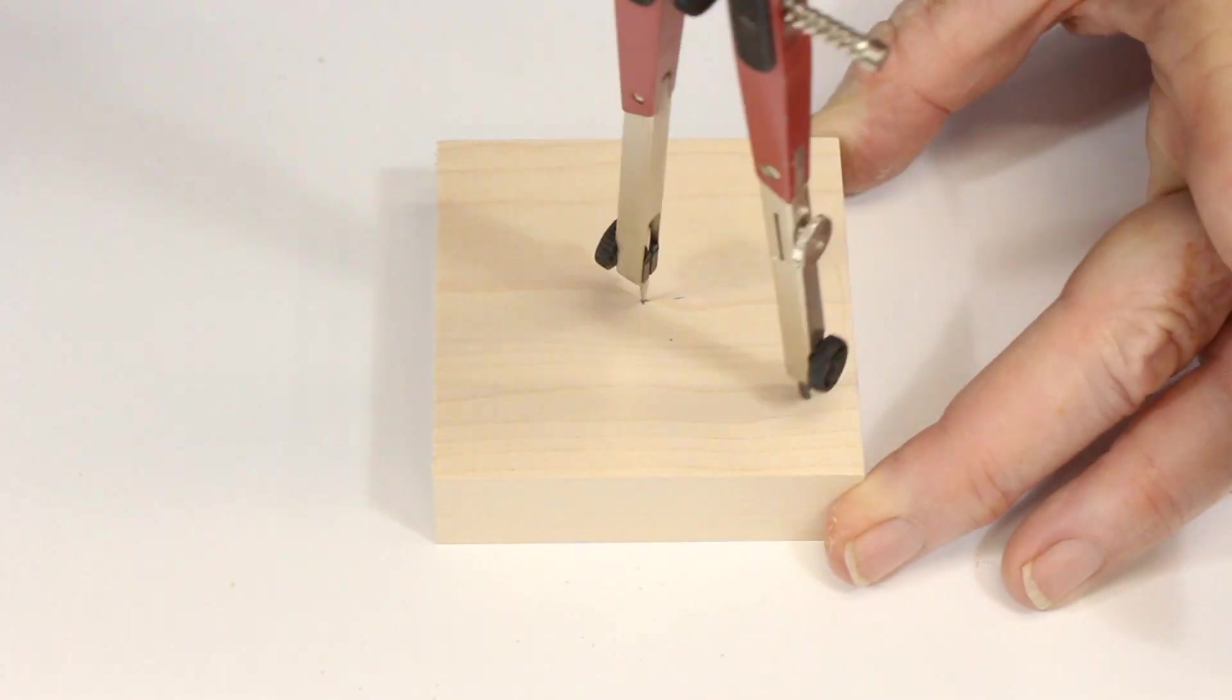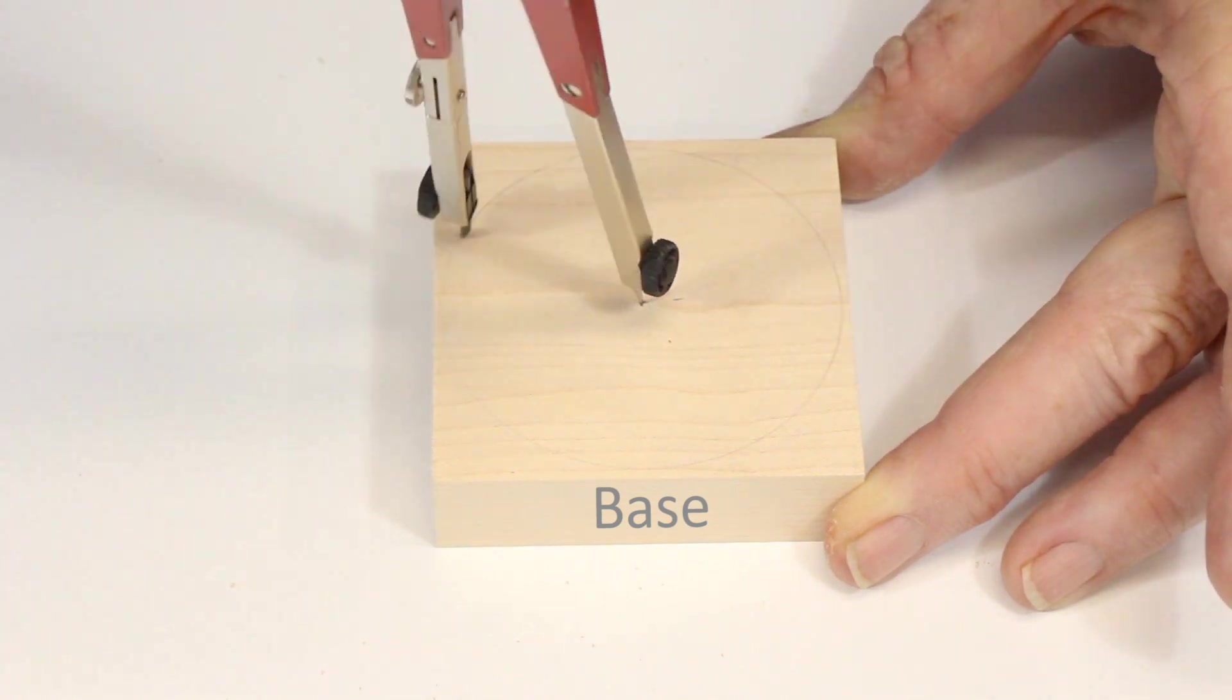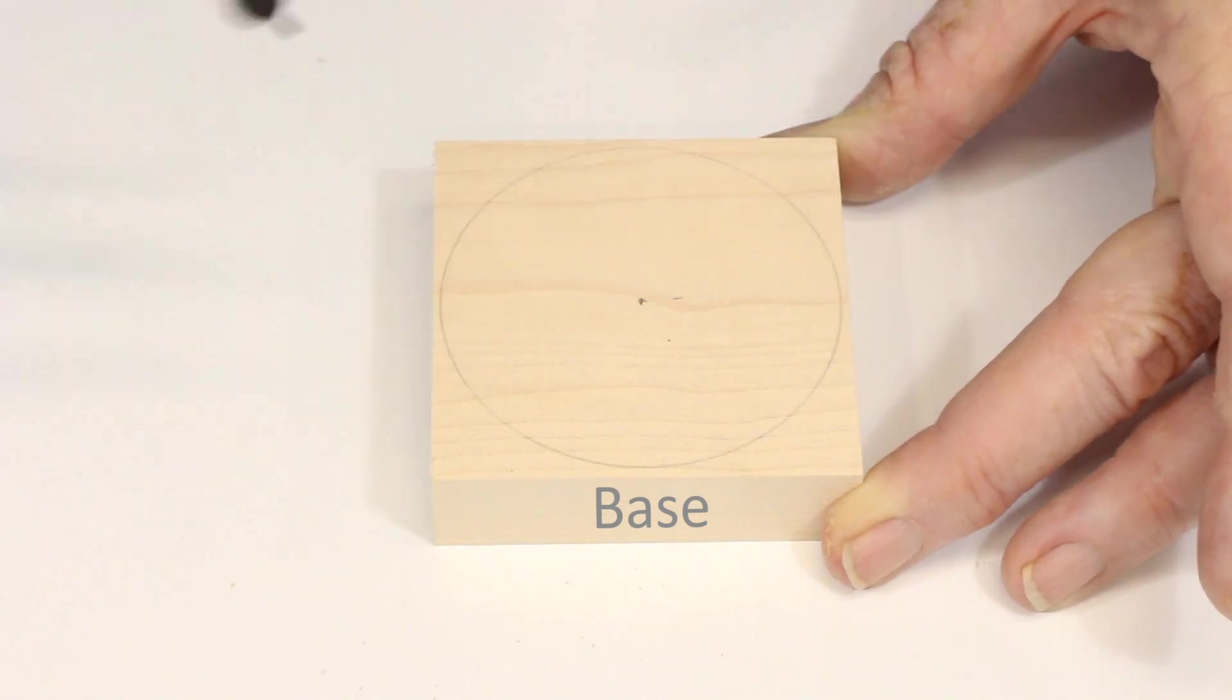While the glue was curing, I cut out a circular base that was 7 centimeters in diameter, or 2 and 3/4 inches, from the same stock.